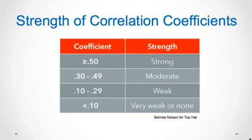Here is a table to help you determine the strength of associations or linear relationships based on correlation coefficients. A coefficient greater than or equal to 0.5 means a strong relationship. A coefficient between 0.3 and 0.49 is considered a moderate relationship. A coefficient between 0.1 and 0.29 is considered a weak relationship. And a coefficient less than 0.1 is considered very weak to no relationship.